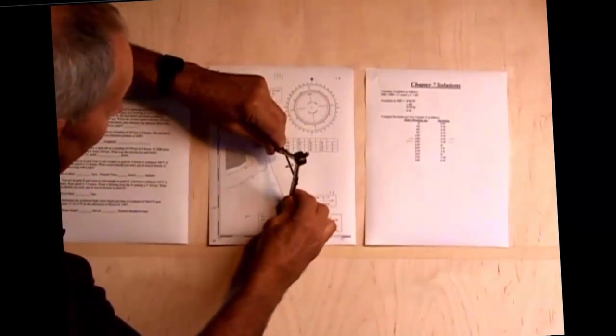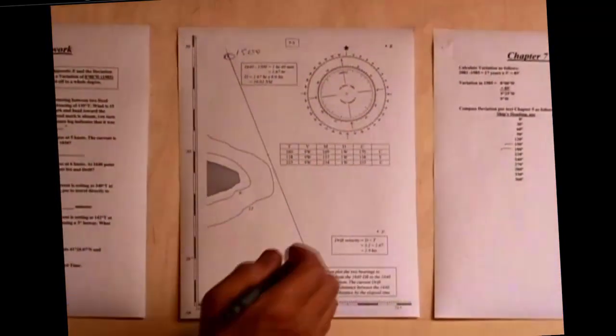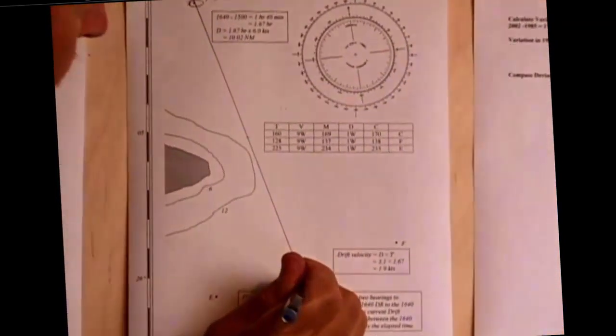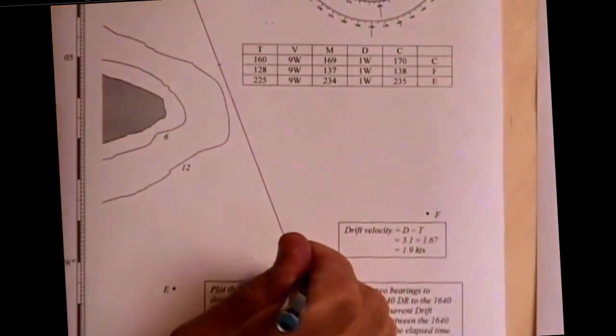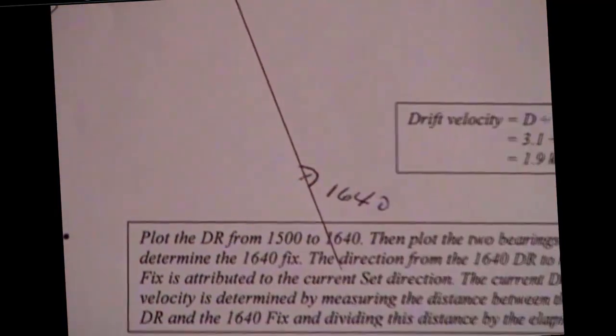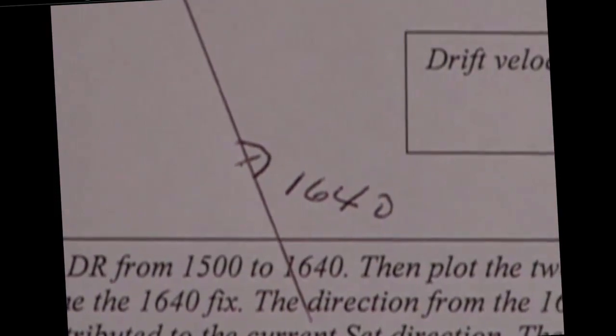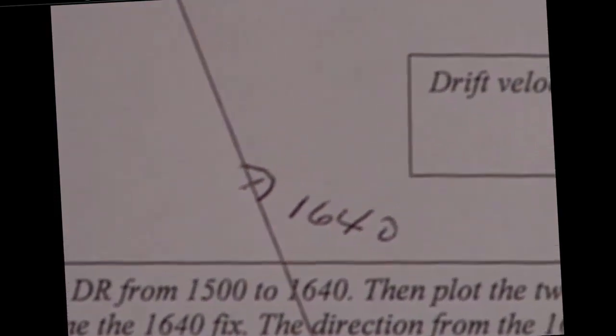Put that 5 in, and that then is my DR at 1640. I put a half circle and a dot because half circle is the designation for the DR.